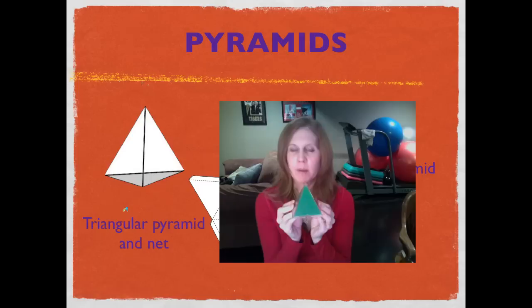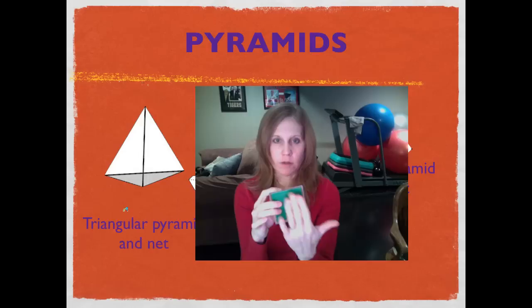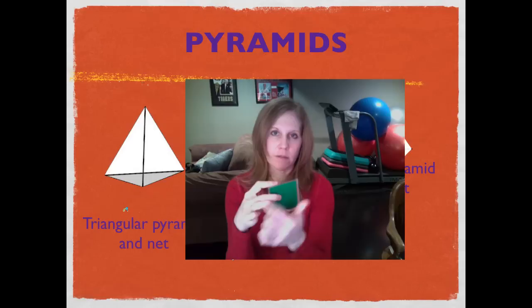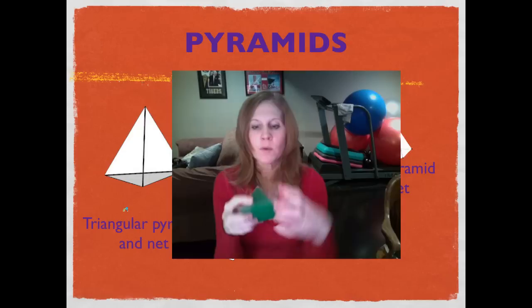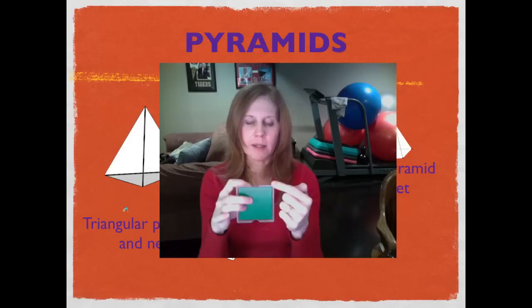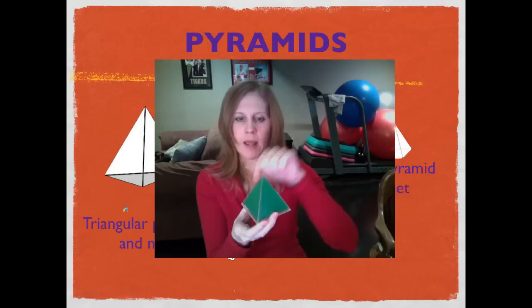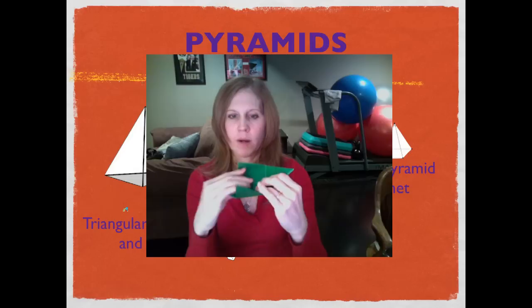Here's a square pyramid — it's called that because the base is a square. It has one square base plus four triangular faces, for five faces in all. If a square has four sides, it's going to have four triangular faces coming up the sides. Counting the edges: four on the base plus four connecting edges equals eight edges total, and five vertices. When we open it up to show the net, the square is in the center and we have four triangles around it.